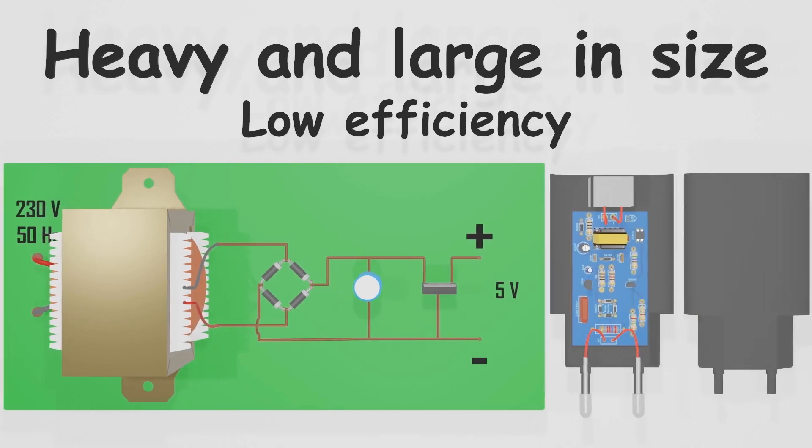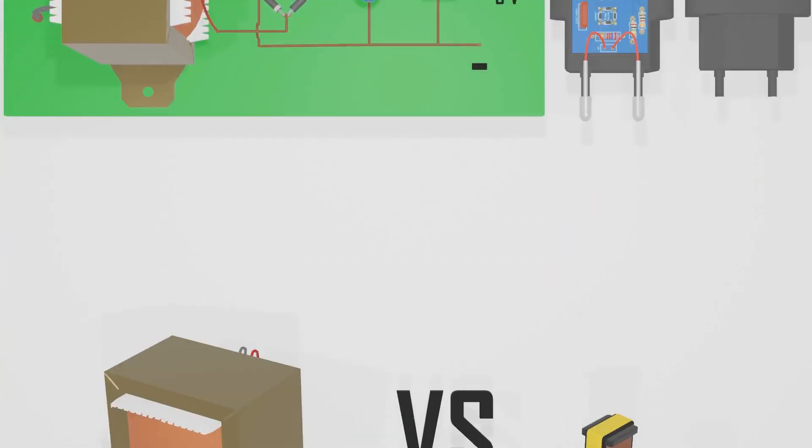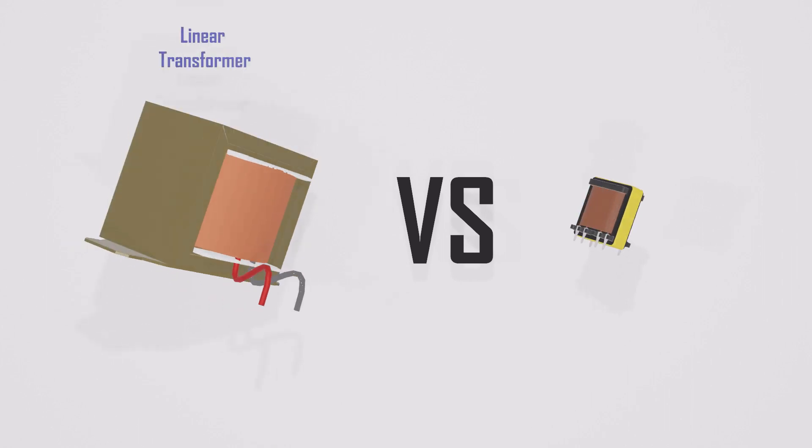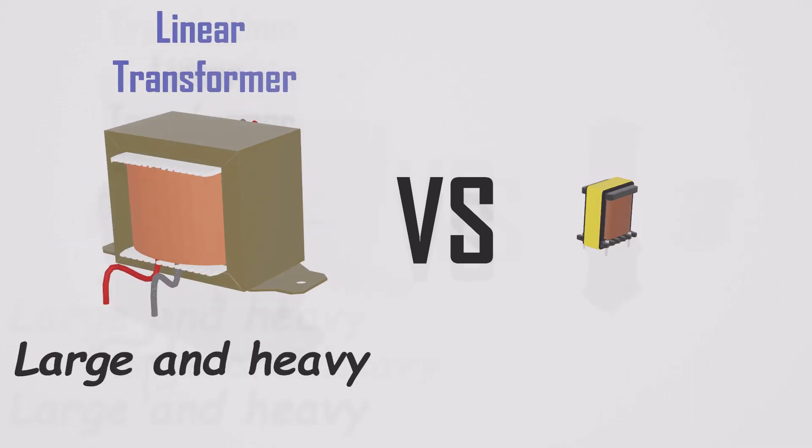One of the main differences between these power supplies is the size of the transformer used. In traditional linear power supplies, the transformer is a large and heavy component. On the other hand, the phone charger contains a much smaller transformer. Let's discuss how this is achieved.